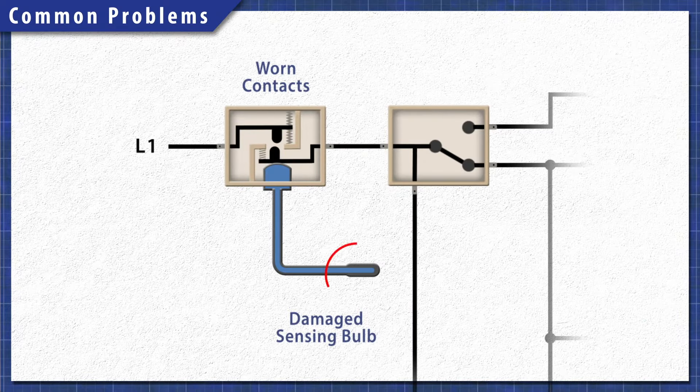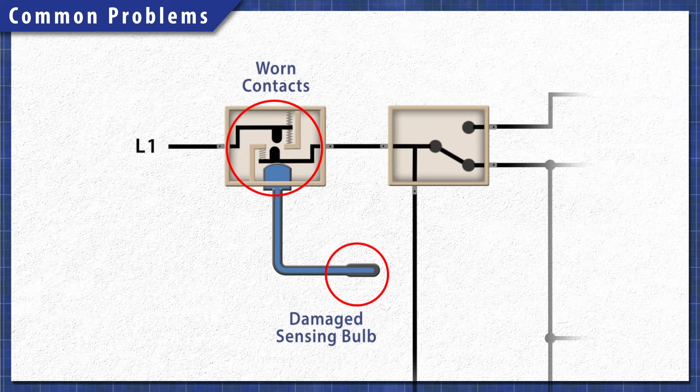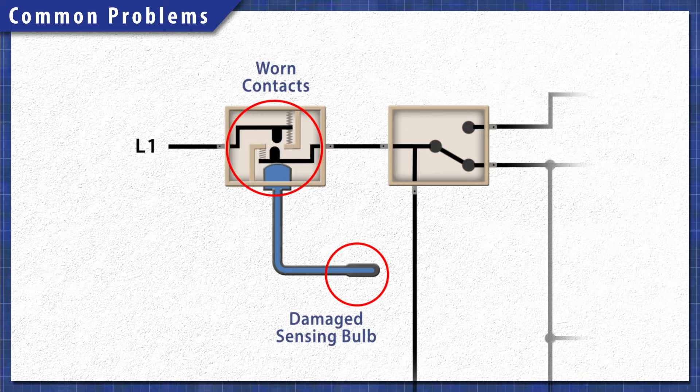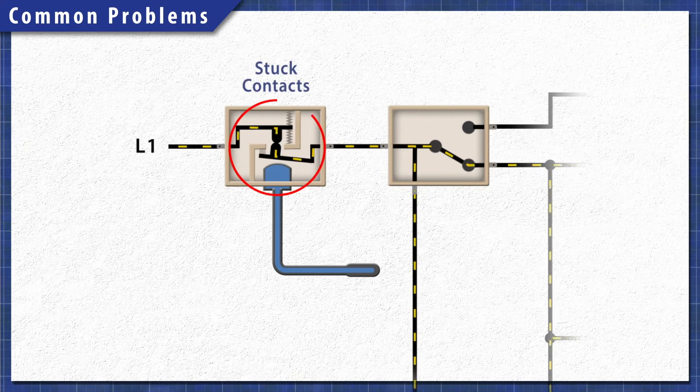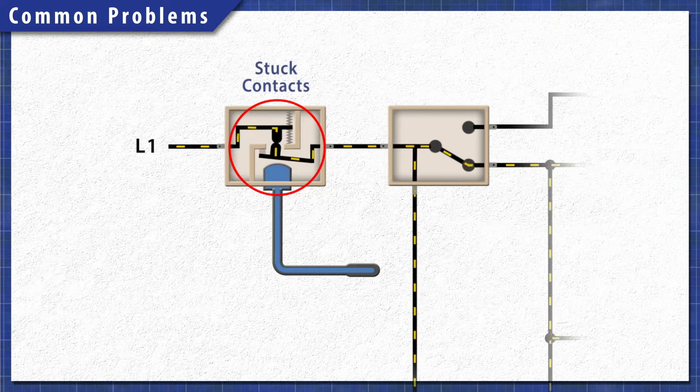If the sensing bulb is damaged or if the contacts are worn out, then the refrigerator will not maintain the right temperature. Additionally, if the contacts are stuck closed, then the compressor will stay on and the fridge will be too cold.